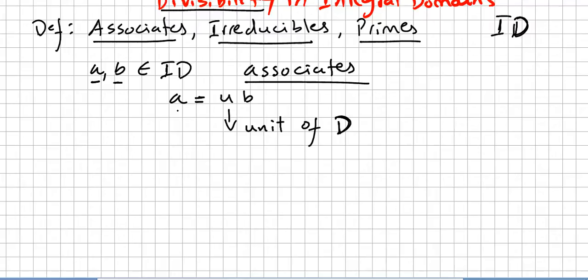If A is a factor of B — B of course in the integral domain — differing by a unit of the domain.